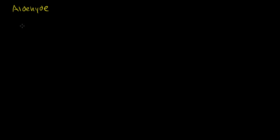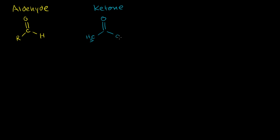In the last video, we learned a little bit about aldehydes. We saw that they had the general structure where you have a carbonyl group bonded to some type of carbon chain, or in the simplest form, just a hydrogen. They will have at least one hydrogen bonded to the carbon in the carbonyl group. Now very closely related to an aldehyde is a type of molecule called a ketone.